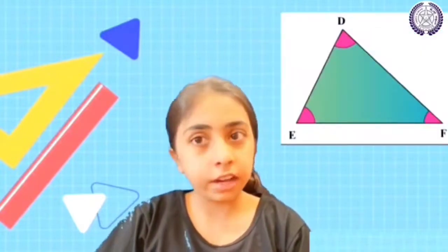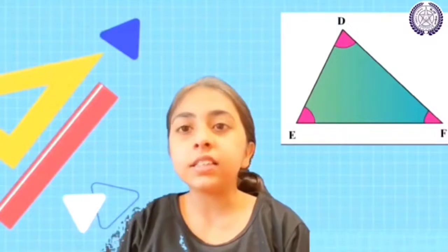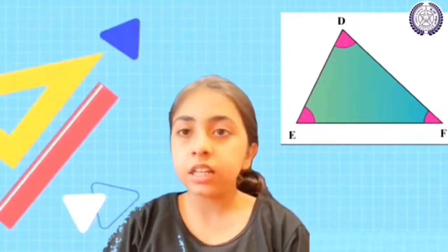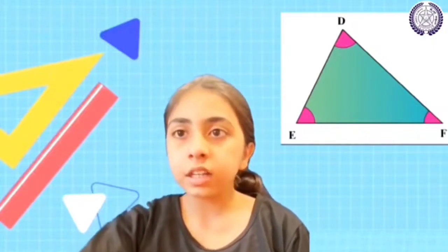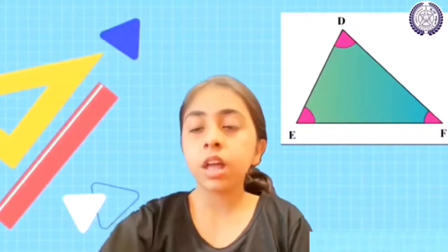If we take a triangle, we have three sides. The point where two sides or two lines of a polygon meet is called a vertex. A polygon can have more than three vertices. Those are the main things you need to know about polygons. Thank you.